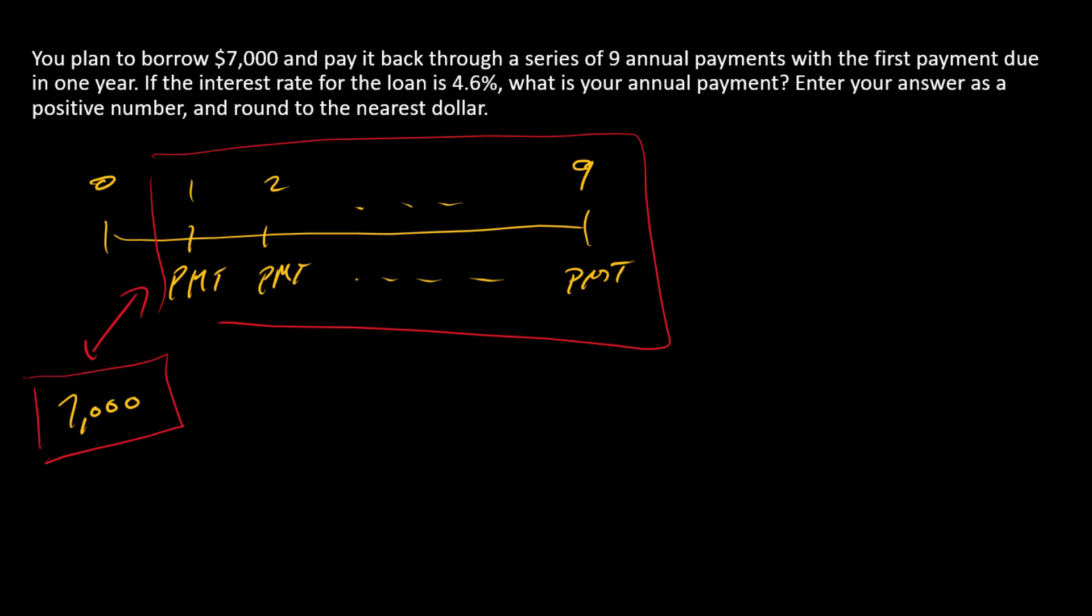Okay, so this is an ordinary annuity. We've got equal payments occurring over a finite period of time and the first payment happening one year from now. So all we need to do is find the payment amount. I'm going to use my financial calculator. Okay, so let's get this set up and make some notes before we start plugging numbers in.